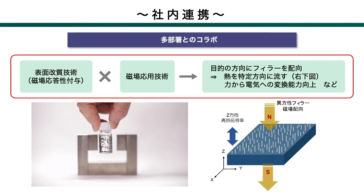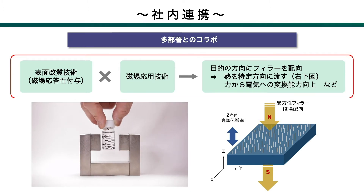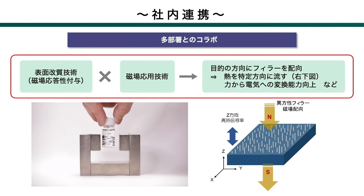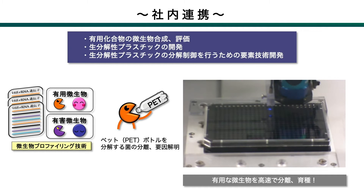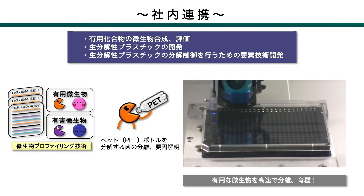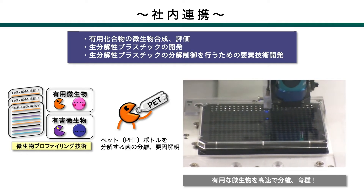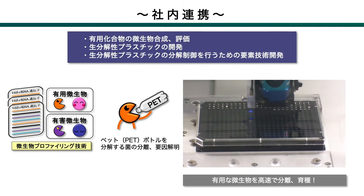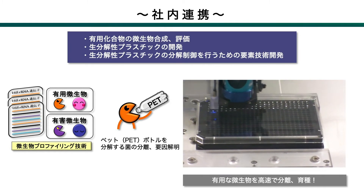我が部は現在20名近くのメンバーが在籍しており、高分子系・有機合成系・分析系の研究員が連携しながら、お客様の研究を支援しております。最近では、社内連携を通じた材料・技術開発も積極的に行っております。例えば、我が部の表面修飾技術により、フィラーに磁場応答性を付与することで、磁場応用を得意とする部門と連携し、フィラーを目的の方向に配向させるような技術の開発を進めています。また、特異的な機能を有する微生物探索や、それら微生物の力を増幅させることを得意とする部門との連携により、有用化合物の微生物合成や、ご希望のタイミングで分解を促進するような生分解性プラスチックの開発にも取り組み始めています。